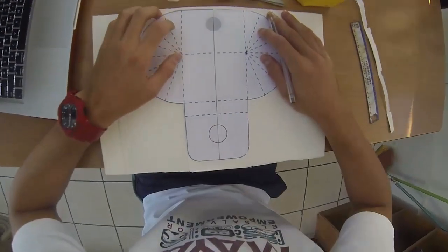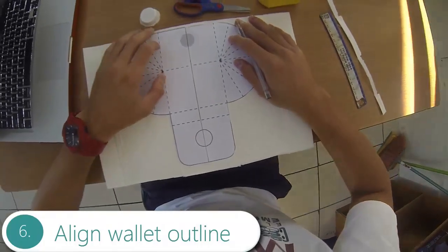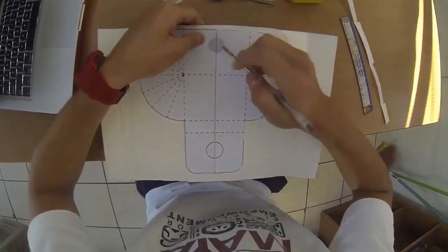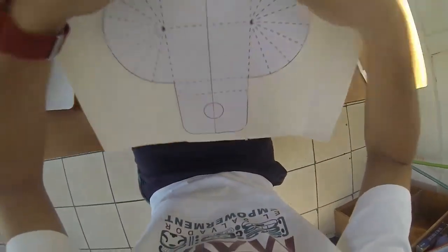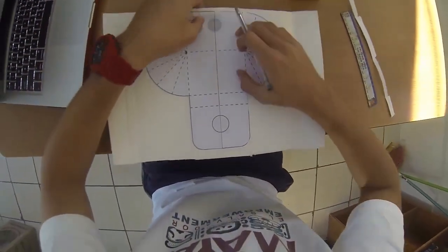Now, align the outline that you printed and cut from the description below, and make sure the marks in the outline are perfectly aligned with the holes on the carton. This will be the main body of your wallet.